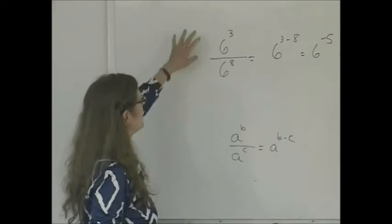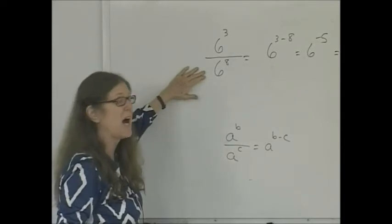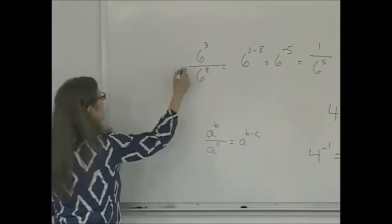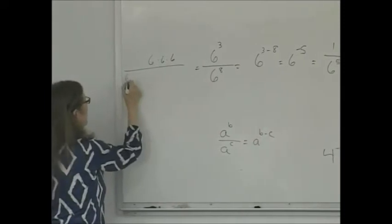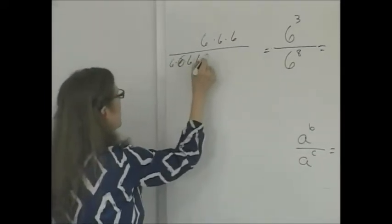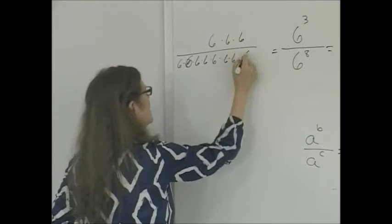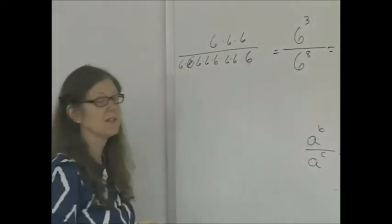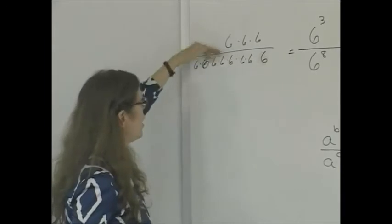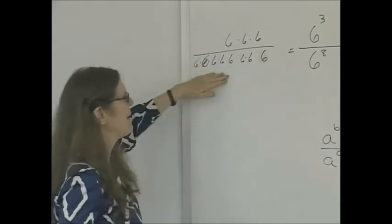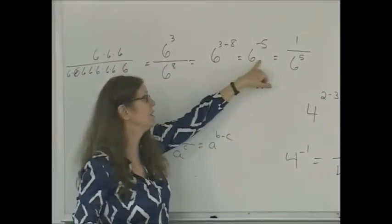Check it out: this is 6 times 6 times 6, three times, over 6 multiplied by itself 8 times. So if we did that, we'd cancel 1, 2, 3 on the top against 3 of the 8 on the bottom, and I have 5 more left on the bottom. So it's 1 over 6 to the fifth, which by definition is also called 6 to the negative fifth.